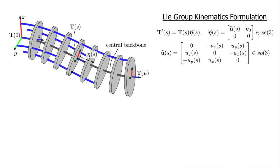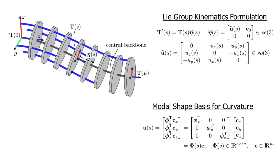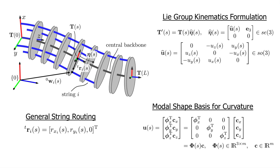We propose a Lie Group kinematics formulation that uses a modal shape basis to describe the central backbone curvature. This formulation permits general string routing designs to be modeled and leads to analytic configuration space and task space Jacobians.